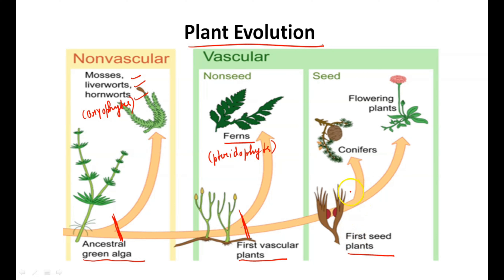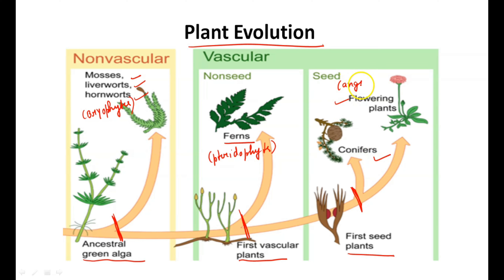From the seed plants we have another common ancestor that gives rise to conifers and flowering plants. Flowering plants are none other than angiosperms, and conifers are our gymnosperms.